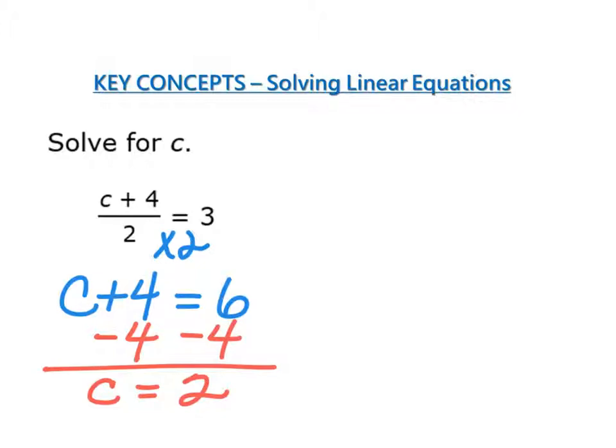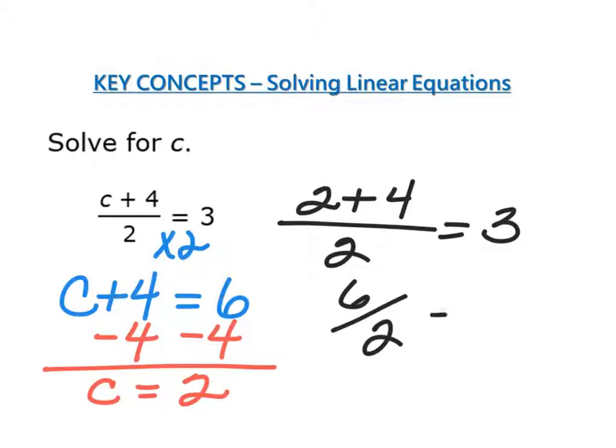Now I'm going to check that to see if 2 actually works. So I have 2 plus 4 divided by 2 equals 3. 2 plus 4 is 6. 6 divided by 2 equals 3. And since that works out, I know that c equals 2 is the correct answer.